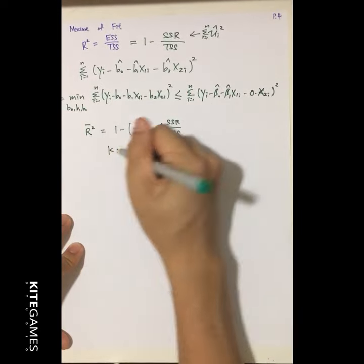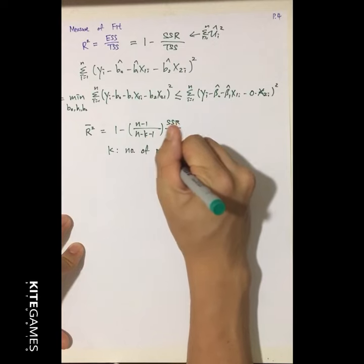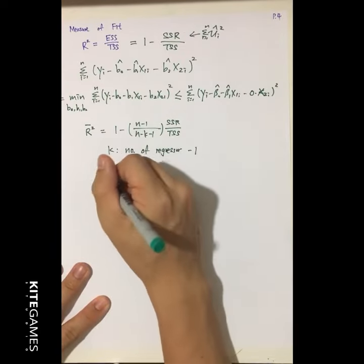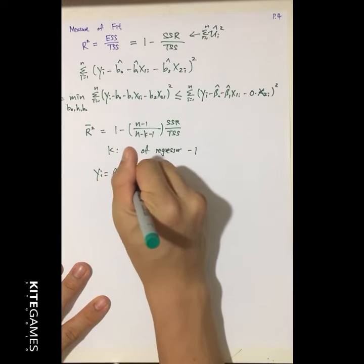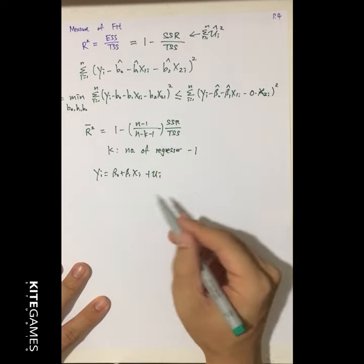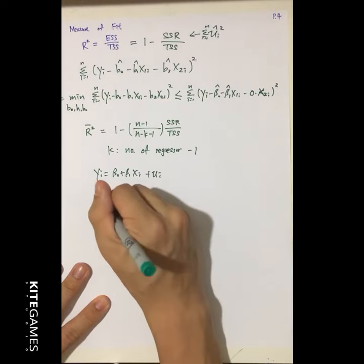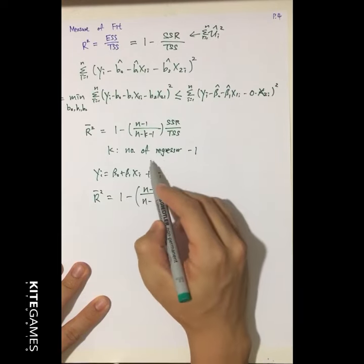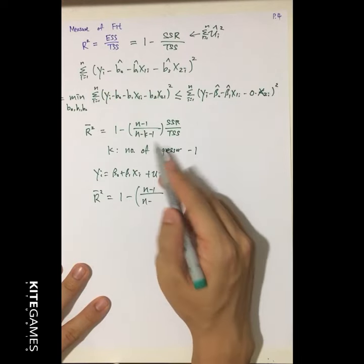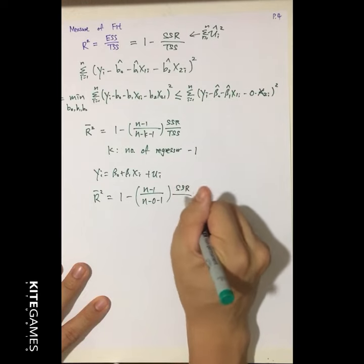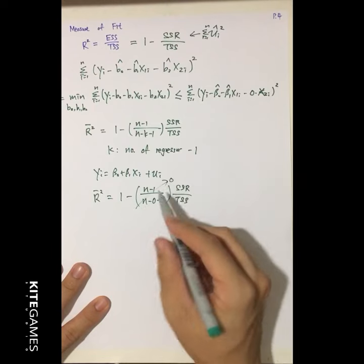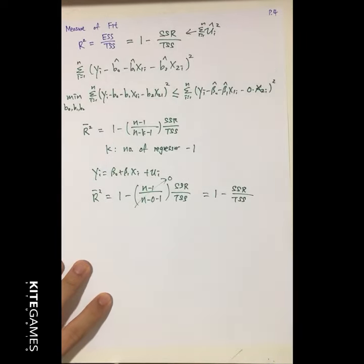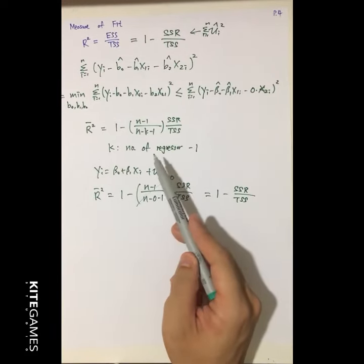Here, k stands for the number of regressors minus 1. For example, in a simple regression model yi = β0 + β1·xi + ui, there is only one regressor, so k equals 0. The adjusted R-square becomes 1 minus (n−1)/(n−0−1) times SSR/TSS. The (n−1) terms cancel, making it exactly equal to the original R-square. This is reasonable because the adjusted R-square is designed to address the problem of multiple regressions.